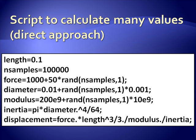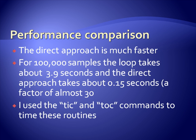And so the reason we do this is because it's much faster. And I did a simple run of each of those with 100,000 samples. I used the tic and toc commands in MATLAB to time them. And I got 3.9 seconds for the loop and 0.15 seconds for the direct approach.